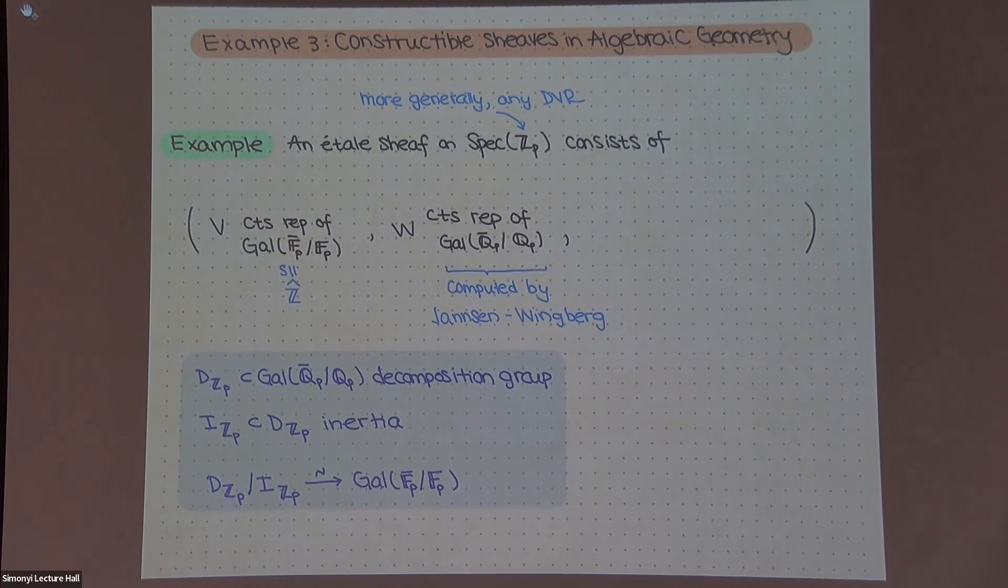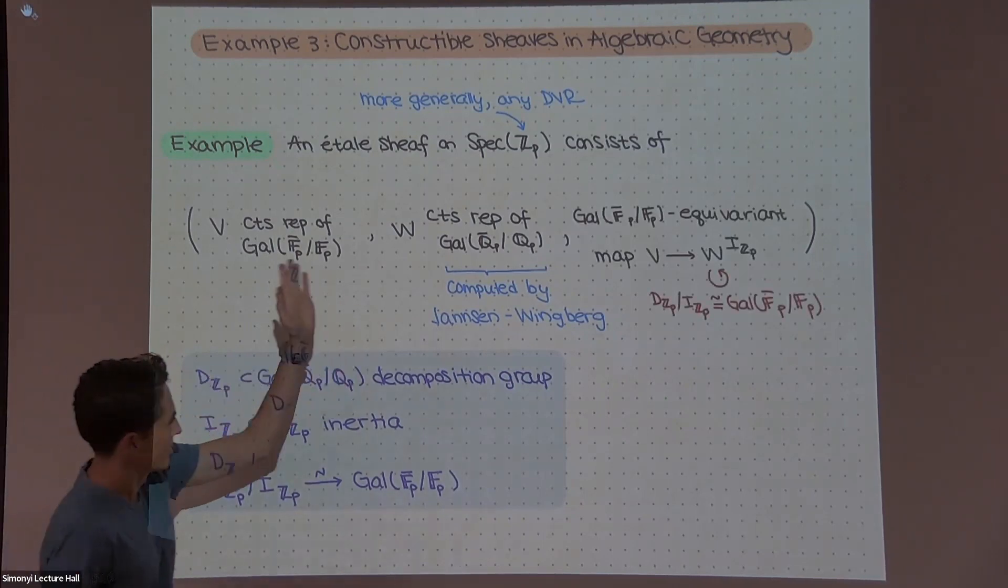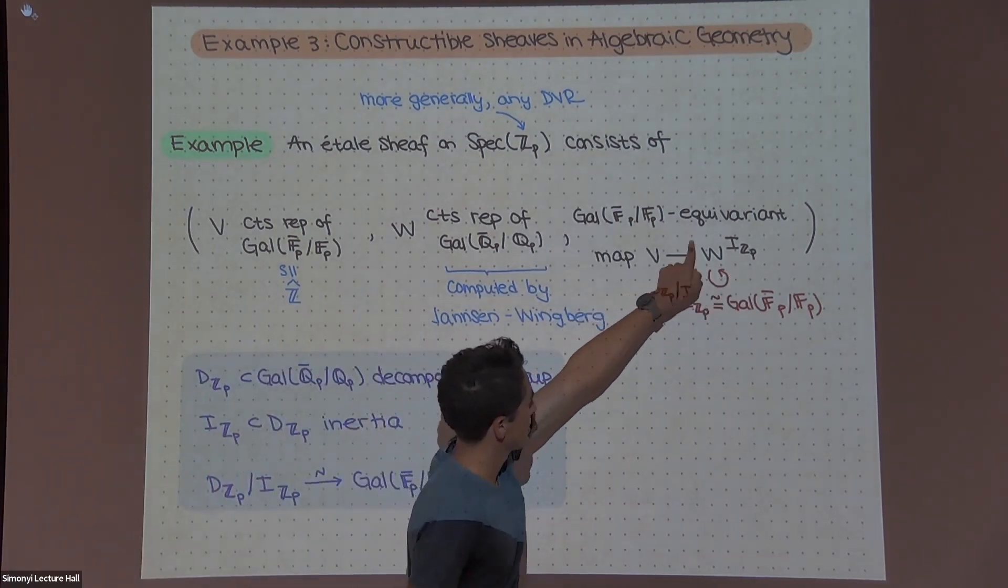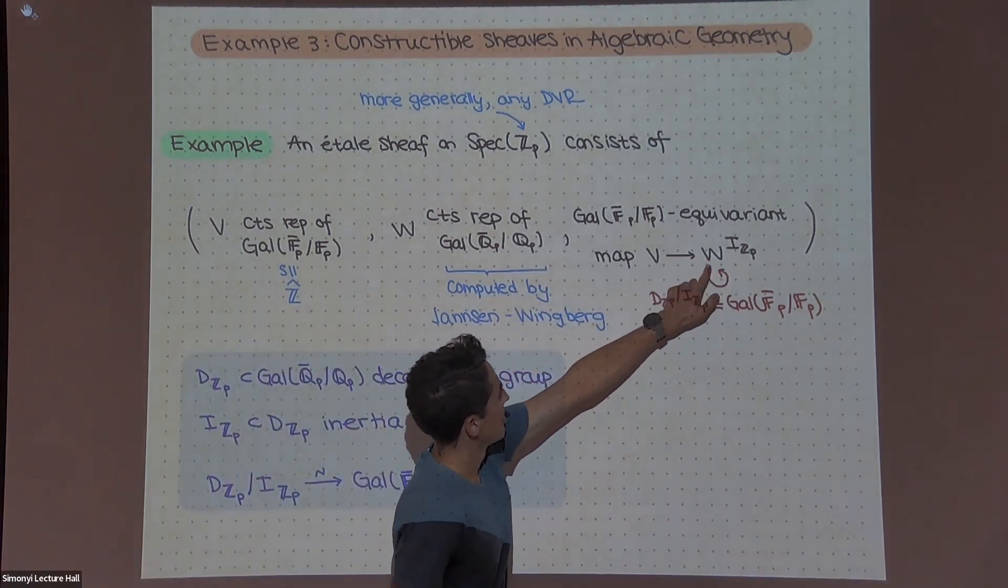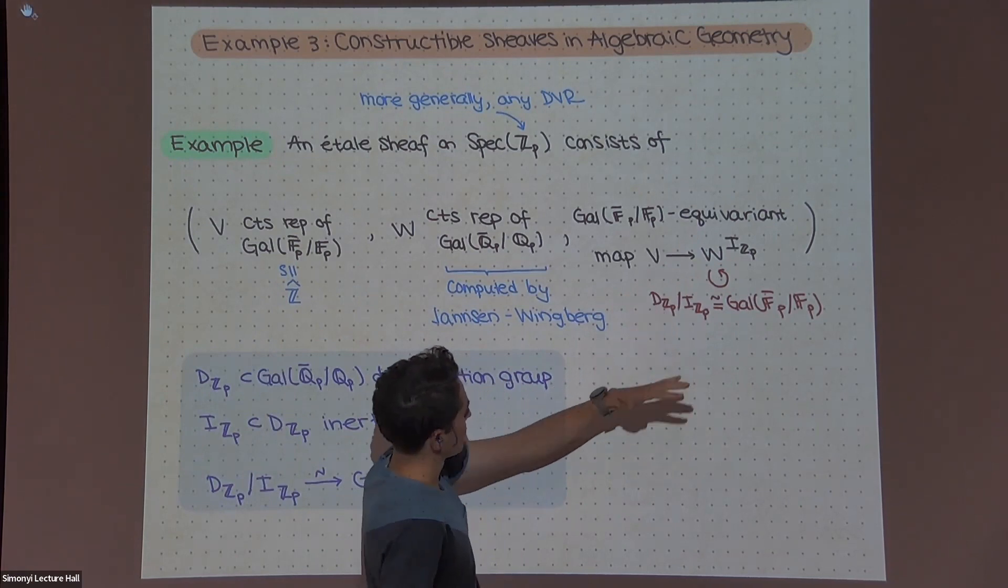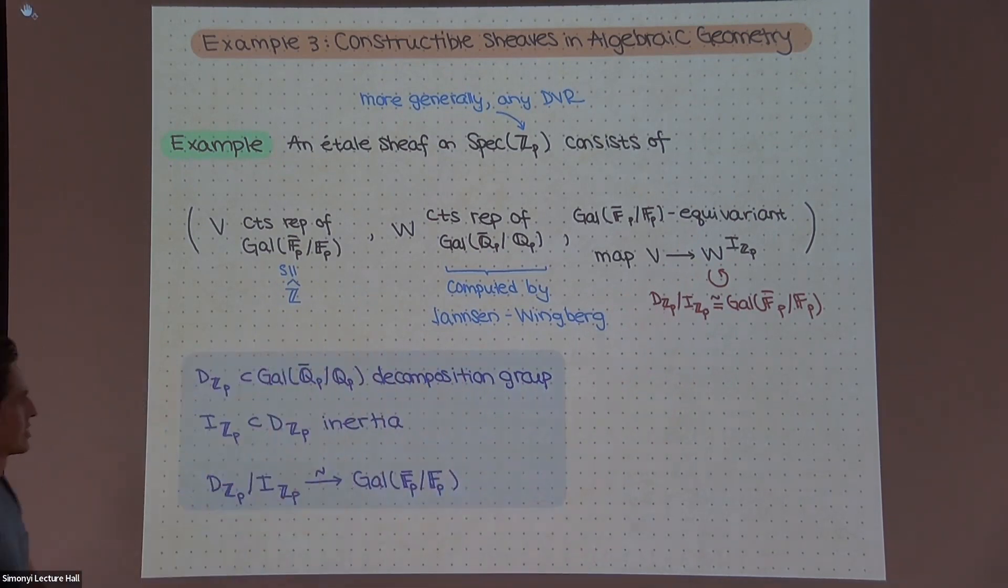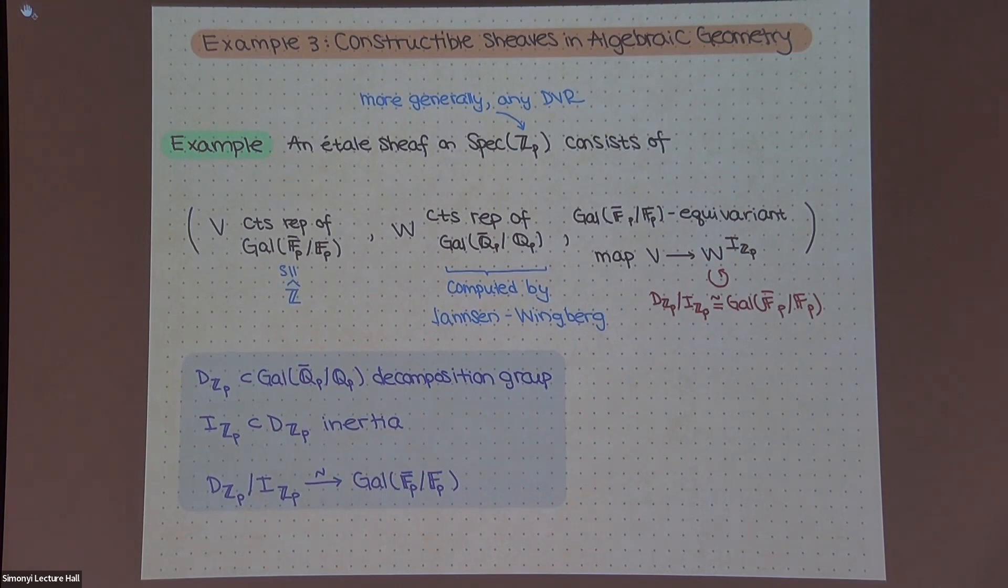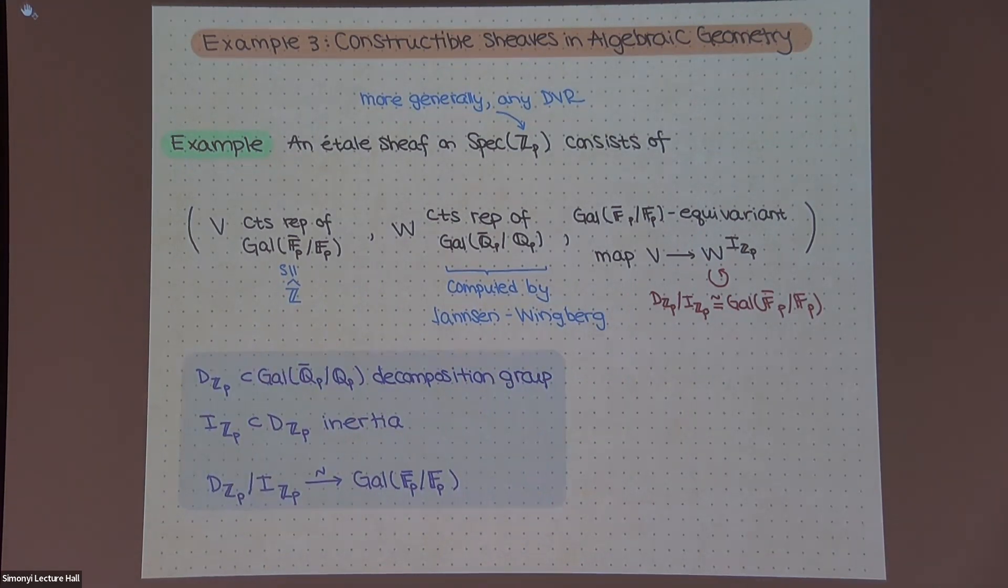And then there's some relationship between these two groups. And while one's not exactly a quotient of the other, but there's something called the decomposition group inside of this Galois group of Q_p, and a further group called the inertia group, so that the quotient of this decomposition by the inertia group is the Galois group of F_p. And this is something that is true for any DVR.